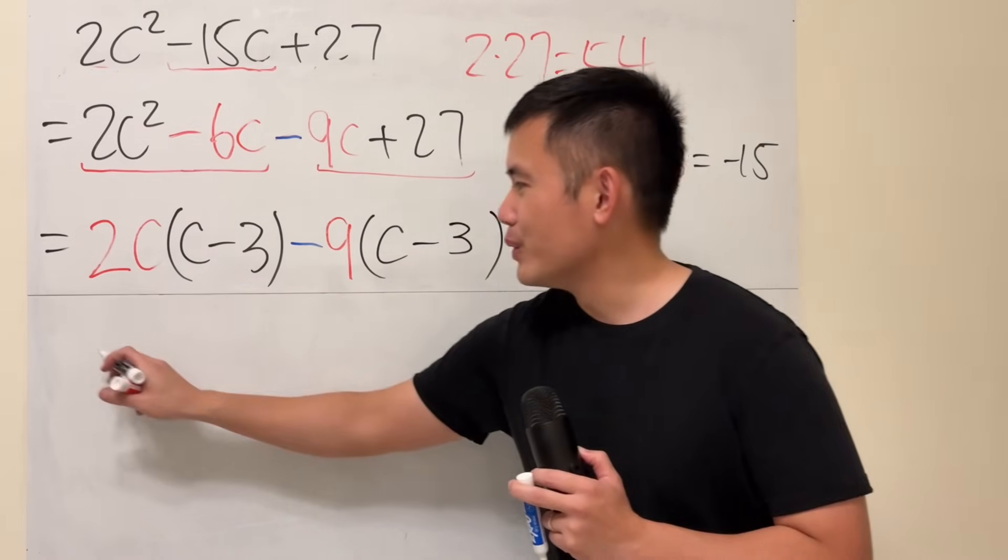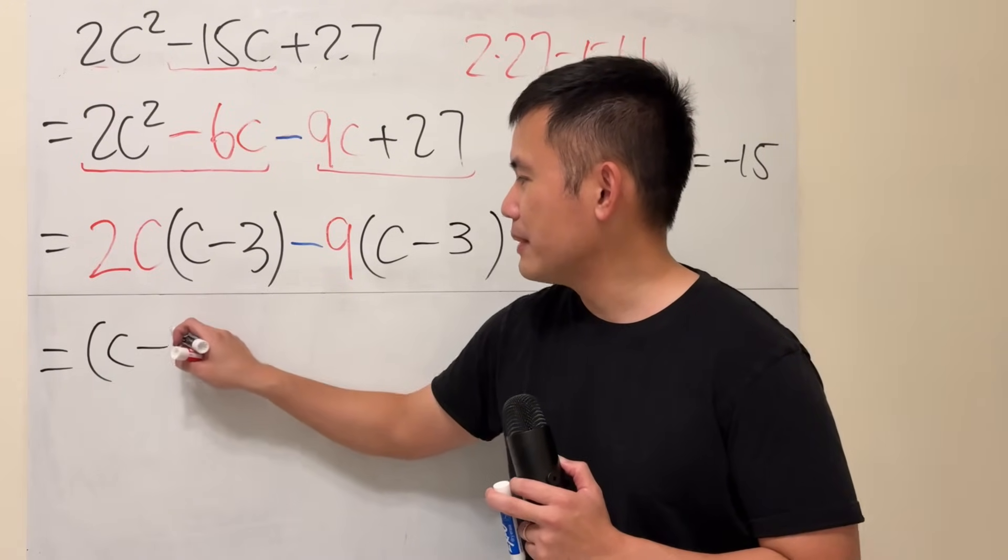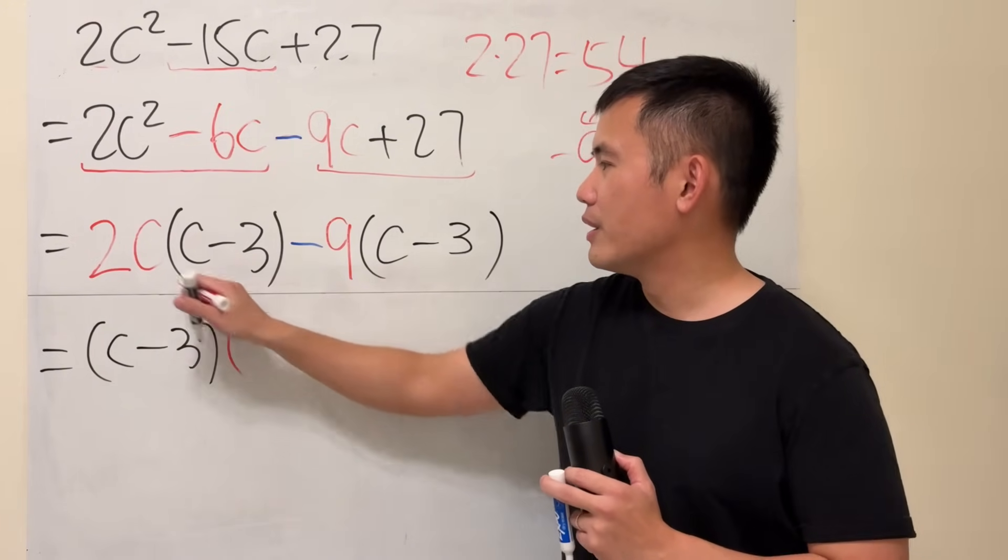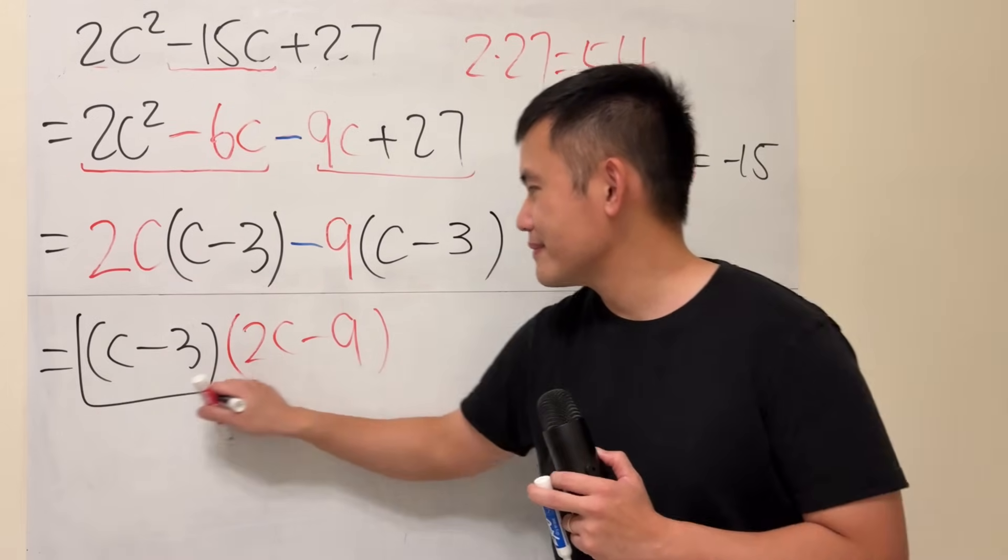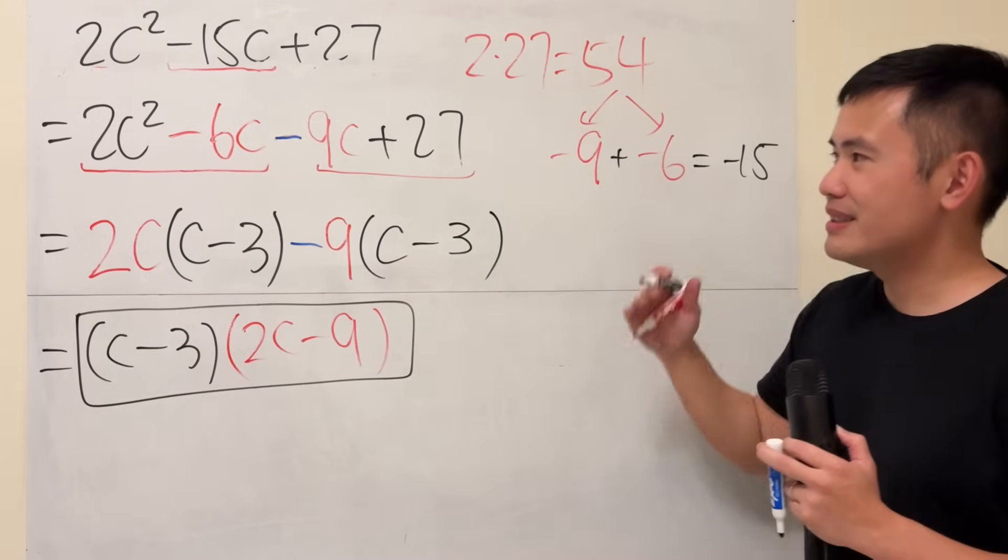So we do have the same thing. And to proceed, we can just go ahead and factor out the c minus 3. And then finish that up with 2c minus 9. And that will do it.